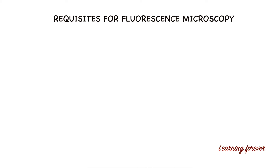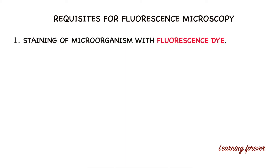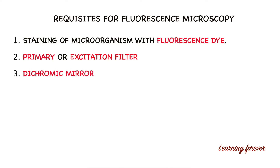There are four important requisites for using fluorescence microscopy. First, staining of microorganism or biological sample with fluorescence dye. Second, a primary or excitation filter. Third, a dichromic mirror. And fourth, an emission or barrier filter. These are the four requisites for studying any sample using a fluorescence microscope.